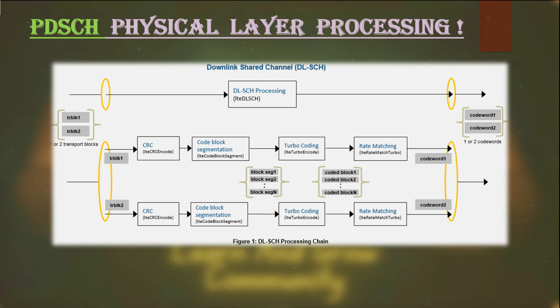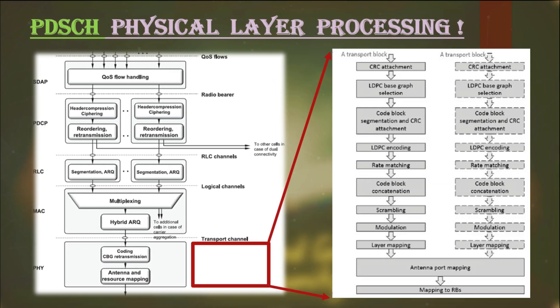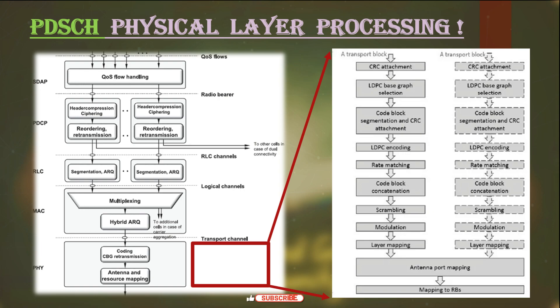The next step is scrambling, which provides interference protection and privacy for the transmitted data. It plays an important role in securing reliable communication between the base station — gNB — and the UE in the 5G network. When many different cells report a similar signal strength, scrambling identifies which PCI to consider and which PCIs to ignore, so that interference won't impact much.